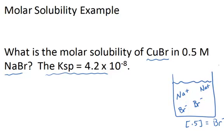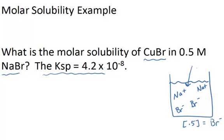I'm going to put into this solution some copper 1 bromide. Copper 1 bromide is not very soluble. The Ksp is only 4.2 times 10 to the minus 8. So I expect to have limited solubility of my copper 1 bromide. And so the question here is, what is the molar solubility in this case when we already have bromide ion in solution? So that's the problem here.